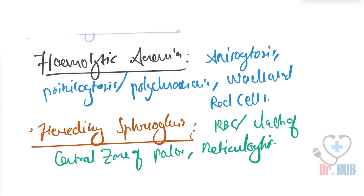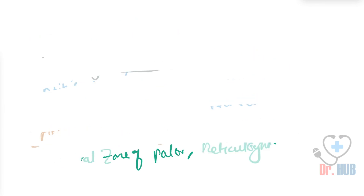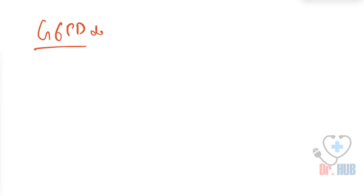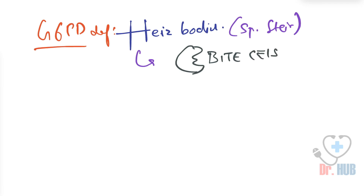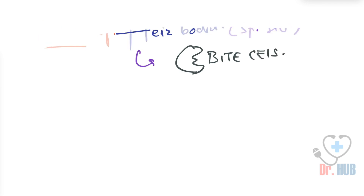Then we look at G6PD deficiency. In G6PD deficiency, the peripheral smear involves Heinz bodies, which are revealed by a special stain, and there is also the presence of bite cells.